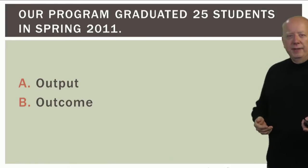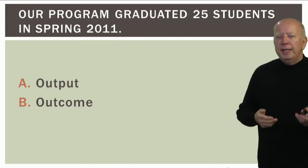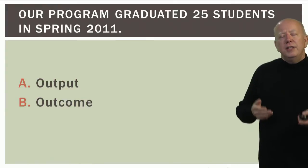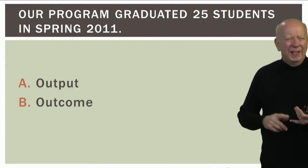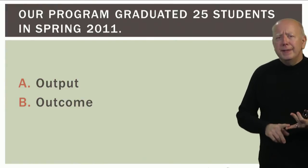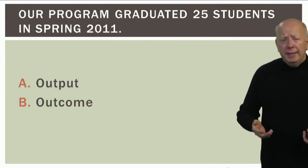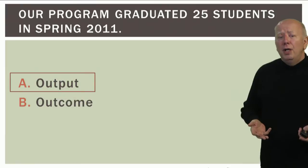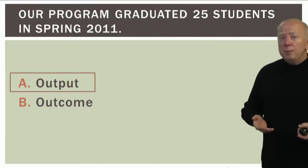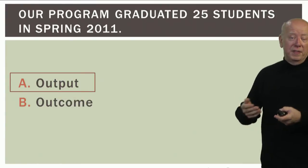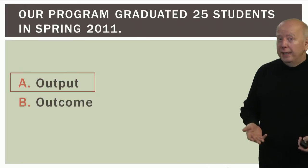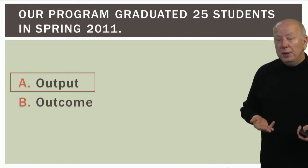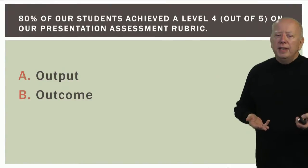Here is a question: is this an output or an outcome? 'Our program graduated 25 students in spring 2011.' Ask yourself: is this counting a number or measuring quality? This is an output because we're simply talking about the number of students graduated. We haven't said anything about the quality of those graduates or what they know and are able to do at the end of their program.